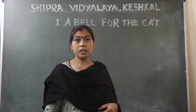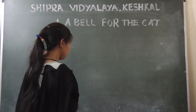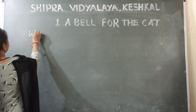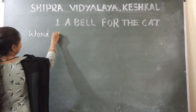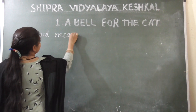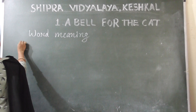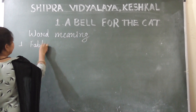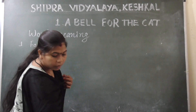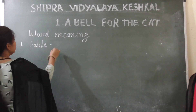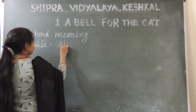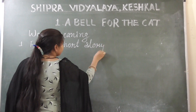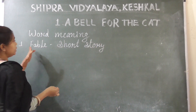Children, here are some words. I'll write their meanings on the blackboard. Look here — Word Meanings. First: fable, F-A-B-L-E. Fable means short story.